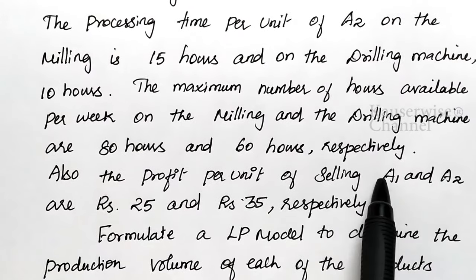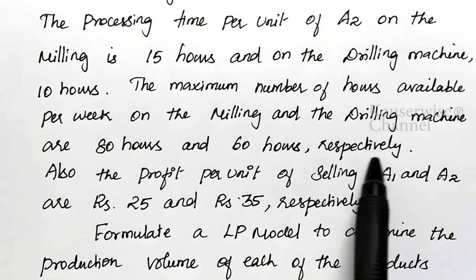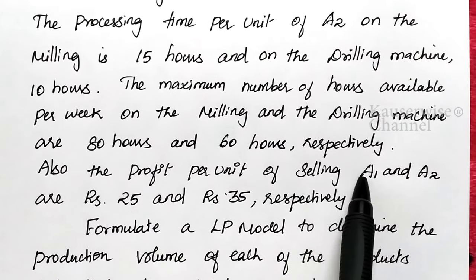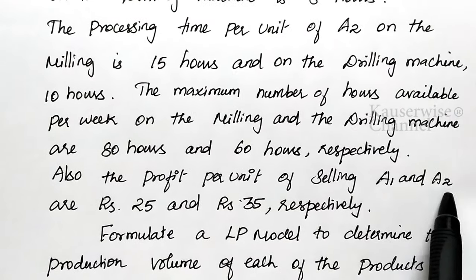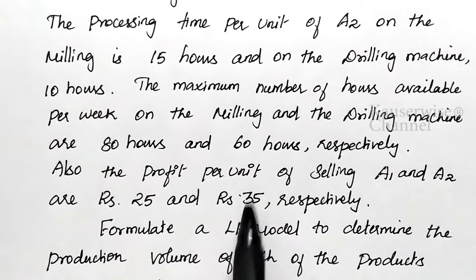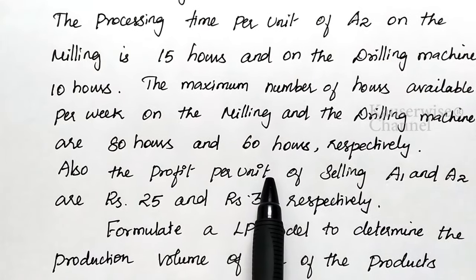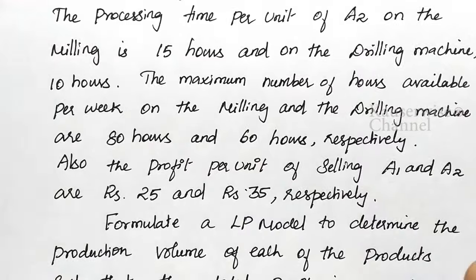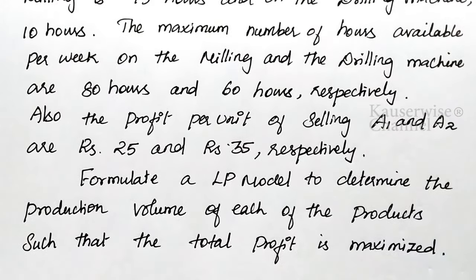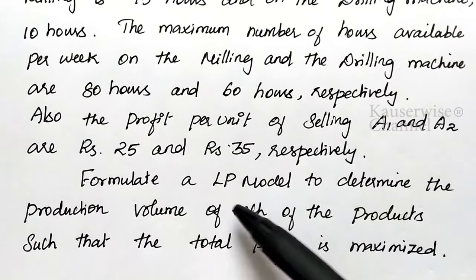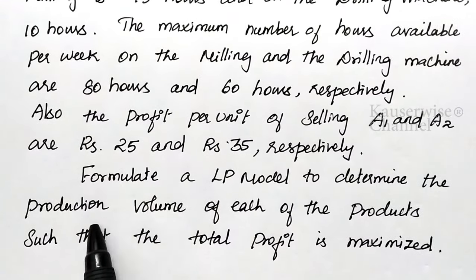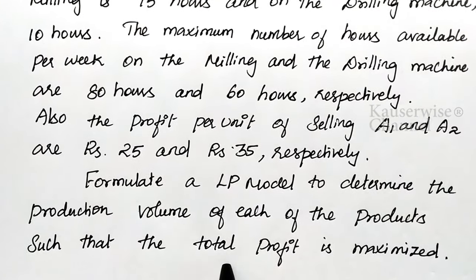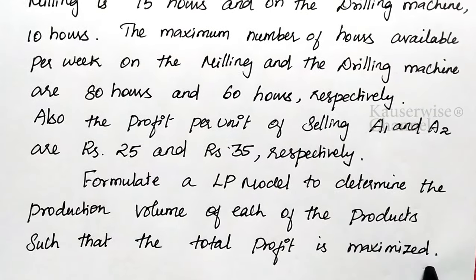Also, the profit per unit of selling A1 and A2 are 25 rupees and 35 rupees respectively. They ask you to formulate an LPP model to determine the production volume of each product such that the total profit is maximized.